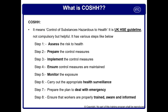COSHH — Control of Substances Hazardous to Health — as per UK HSE guidelines, has eight simple steps: first, assess the risk to health; second, prepare the control measures; third, implement the control measures; fourth, ensure control measures are maintained; fifth, monitor the exposure to people — measuring exposure to toxic gases, ergonomic issues, and hand movement; sixth, carry out health surveillance through periodic medical checkups; seventh, prepare an emergency plan; and eighth, train, inform, and make people aware. You should not be worried if you miss some steps when answering this question in your interview.